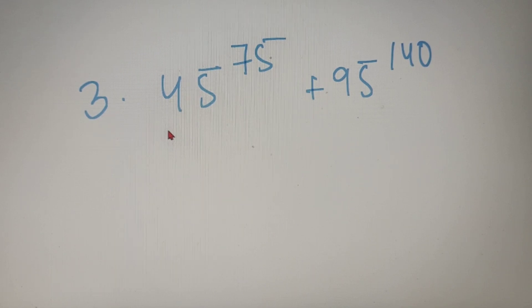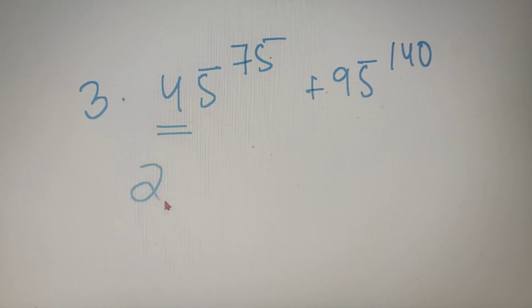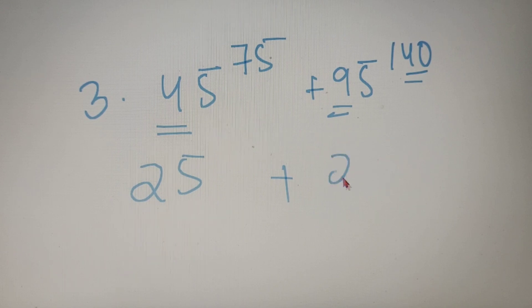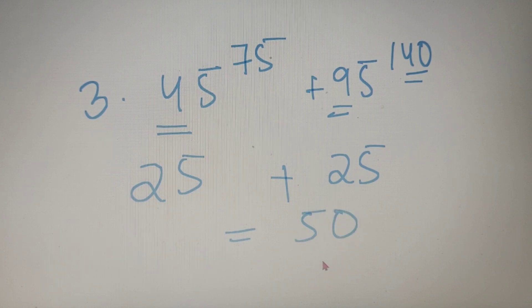For the first number, we can see that the second last digit is even, so we can directly say that the last two digits will be 25. And for the second number, we can see that the second last digit is odd but the power is even, so the last two digits are 25. So the sum of these two numbers is equal to 50, and our final answer is 50.